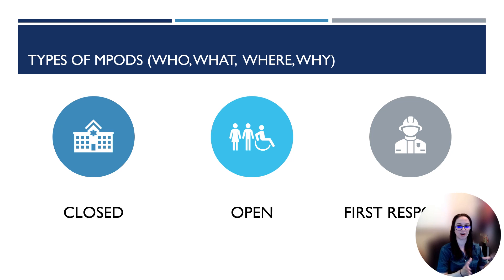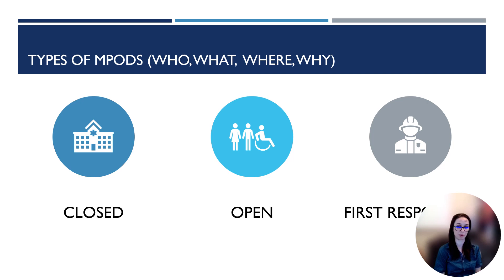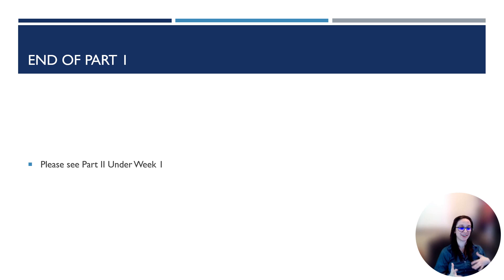All of these types are beneficial and used in different situations. A closed MPOT is beneficial because an organization knows their workers are protected, and it also helps the local health department because that's fewer people to serve at open pods — which becomes really critical in a bioterrorist attack where we need to dispense prophylaxis to the entire community within 48 hours. The more closed pod partners we can recruit, the better. And with first responders, it's also crucial because these are the people out interacting with the public and more likely to become exposed.